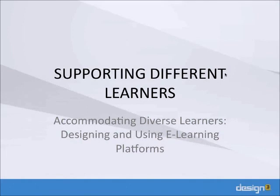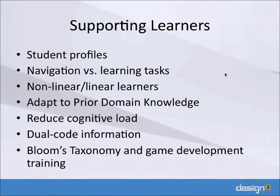How can we use these theories to support all these different types of learners? Every student is an individual — they're going to exist on a different part of the spectrum in each of these areas. Some ways we've identified to support individual learners: make profiles of learners to identify where they're at, separate navigation and learning tasks, generalize learners into linear and nonlinear types, adapt to prior domain knowledge dynamically, reduce cognitive load, dual code the information, and use Bloom's taxonomy to create exercises to augment game development training.